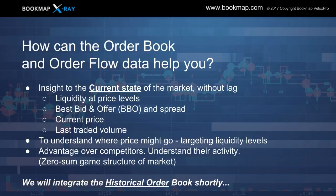The current order book is the current state: the depth on the offer, depth on the bid, the best bid and offer, the last traded volume, and the spread. We record all this data and extrapolate it onto the historical chart. The current state of the market — shown in any DOM — has no lag. It shows you liquidity at price levels, the best bid and offer, spread, current price, and last traded volume. It gives you an understanding of where price might go by targeting high liquidity. This gives you an advantage — you can start to understand competitor activity. Recall that this is a zero-sum game structure within the marketplace.